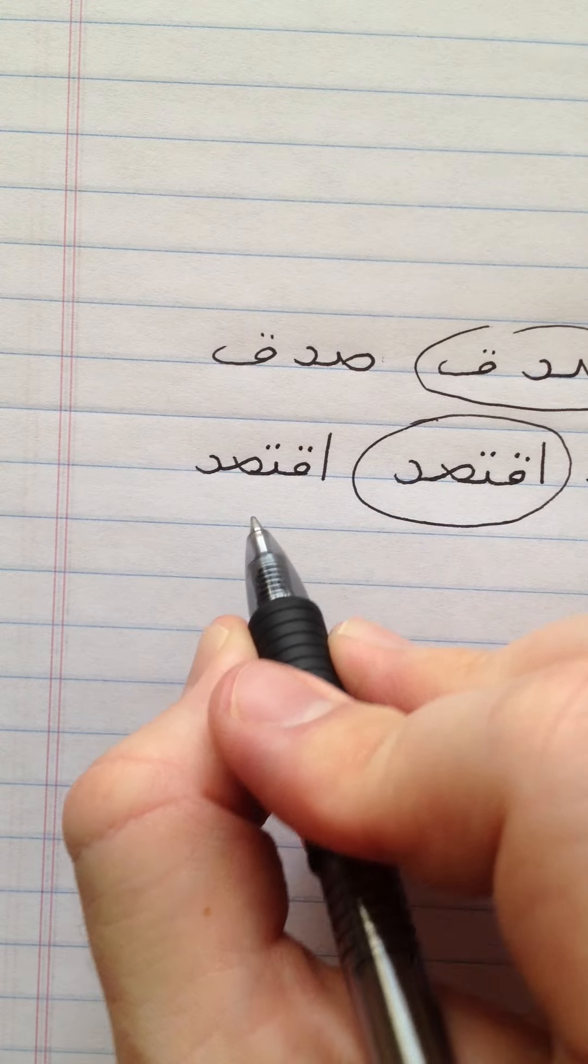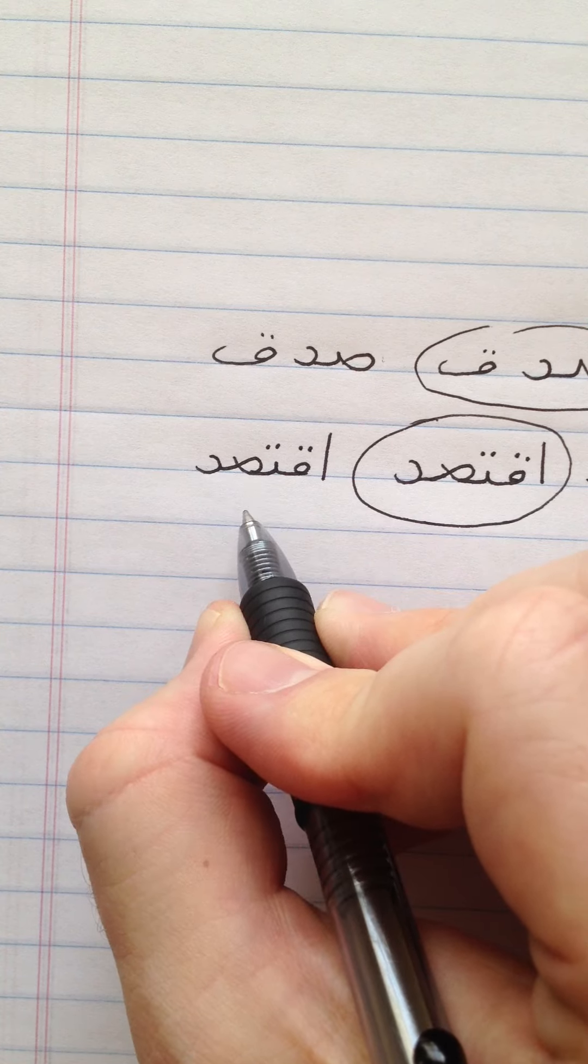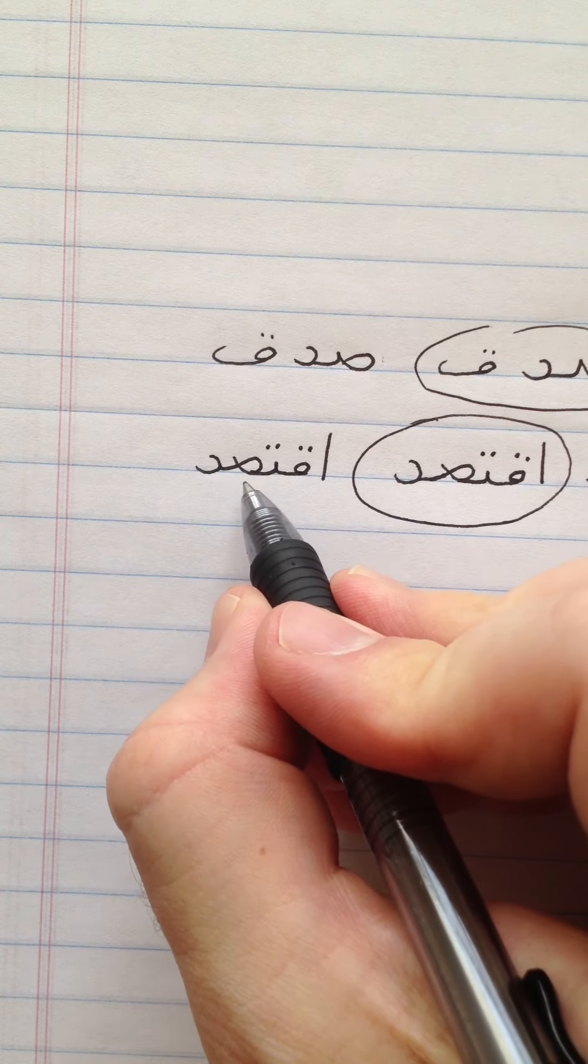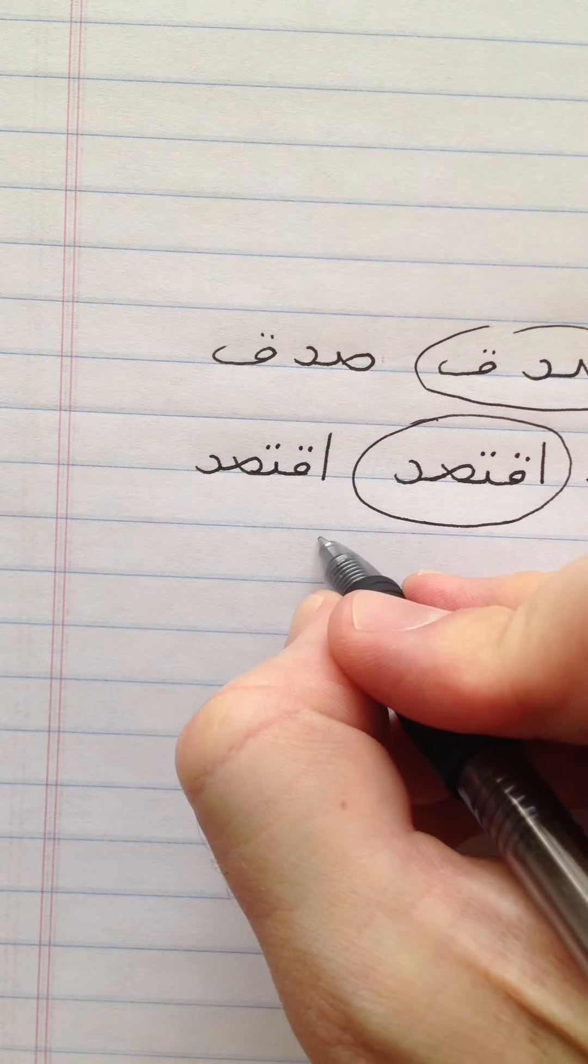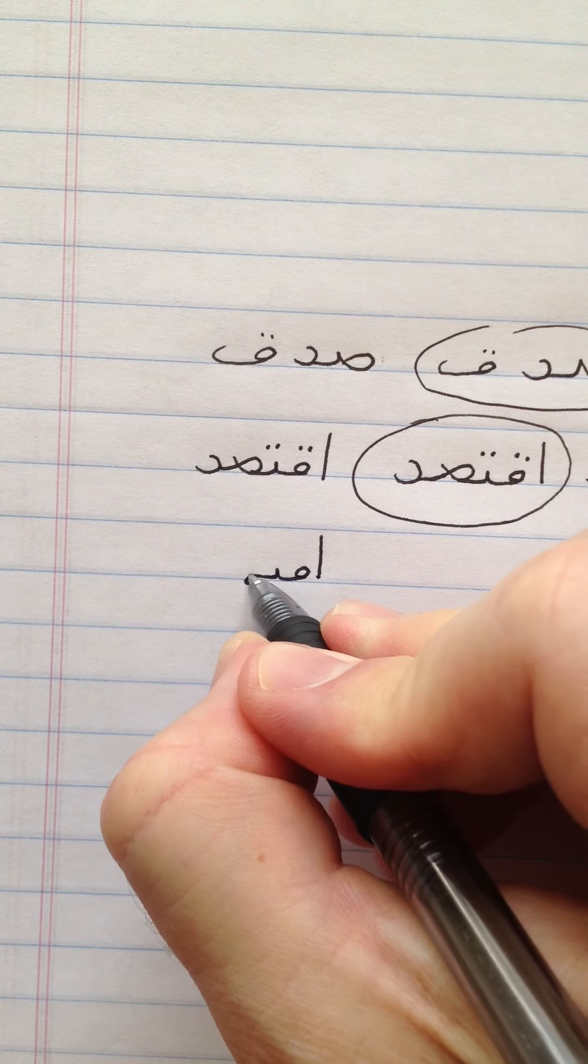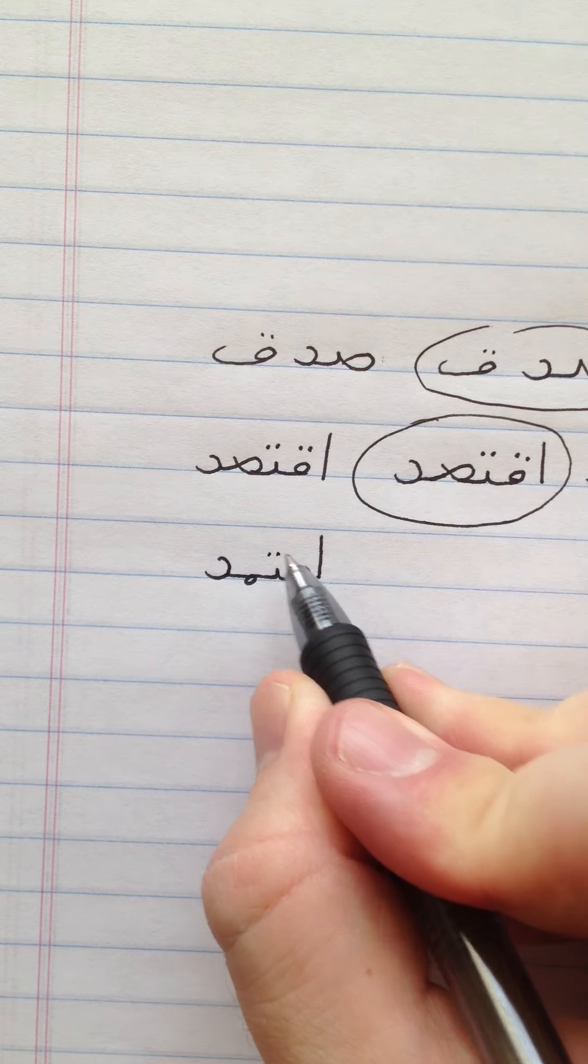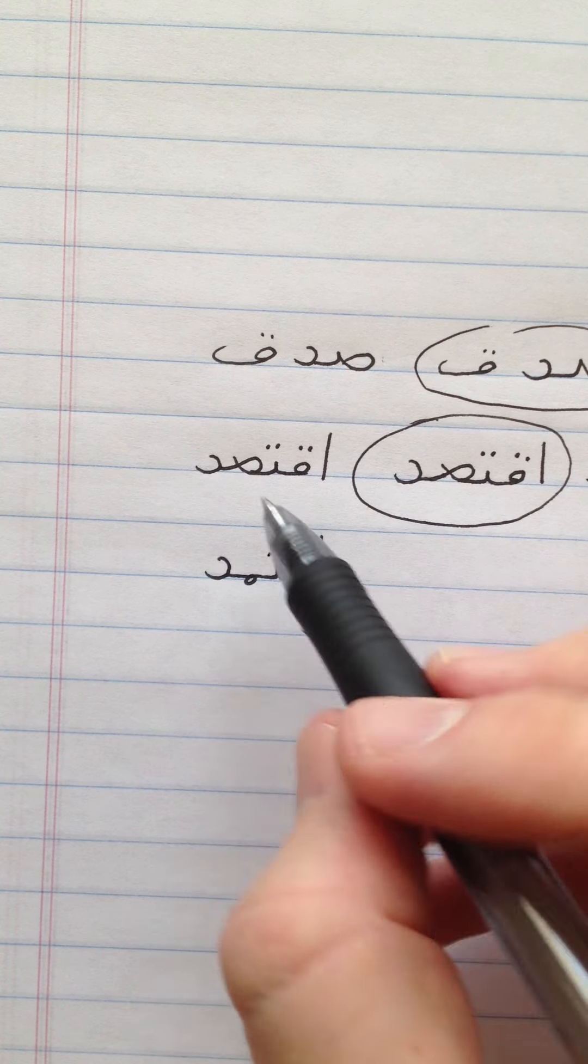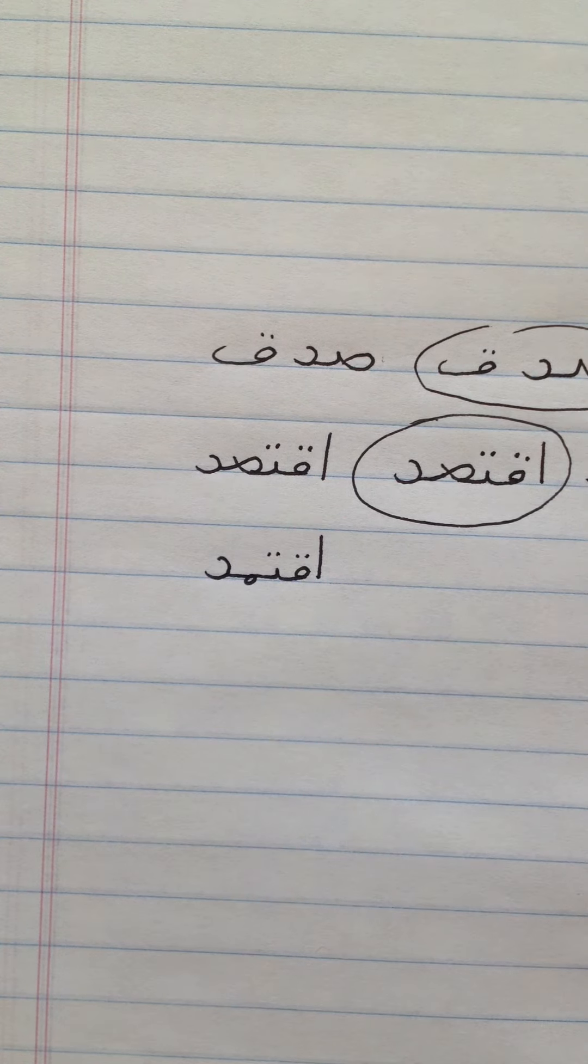Now at this point, I want to mention a lot of people get confused with Swad and Meme when they come in the middle of a word. Let me show you the difference. If this word were Ektamad, it would look like this: Aleph, Khaf, Teh, Meme, Dal. Meme is a very small loop with no peak. Swad is a bigger loop with a peak on the left. That's how you can tell the difference.